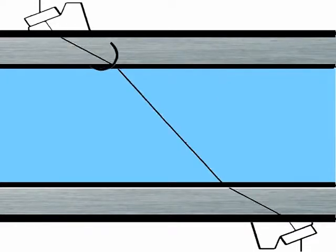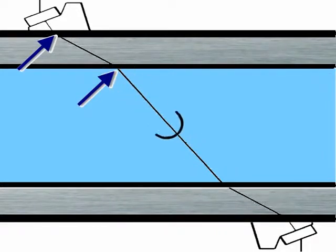For us to get both of these signals across we have to firstly place the transducers very accurately on either side of the pipe. To do this the refraction angles of the ultrasonic signal as it passes from one medium to another need to be known.